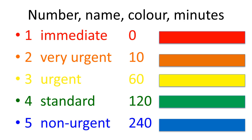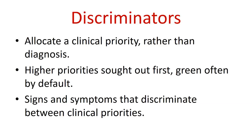Importantly, we also have colours. Red is category one — zero minutes. Orange is very urgent. Yellow is urgent. Green is standard and blue is non-urgent. So every patient under this system is allocated a number and a colour, implying a number of minutes until seen by a clinician. Of course, if we can treat them quicker, that's better. Every patient should be allocated a colour and number describing how urgent it is that they are assessed and treated after presentation.